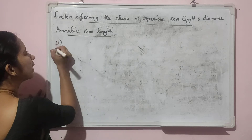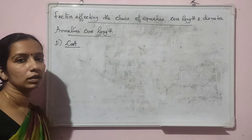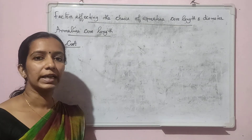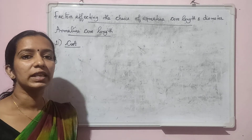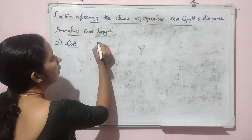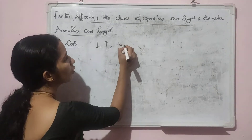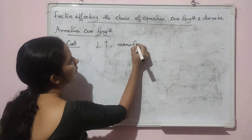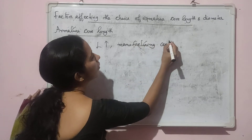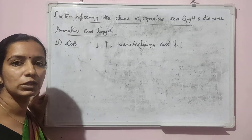The first factor to consider is cost. While considering the cost, it is found that the cost for manufacturing a machine with a larger core length is less. That is, for a machine having a larger core length, the manufacturing cost will be less. As the core length increases, manufacturing cost decreases.